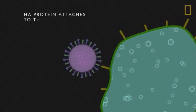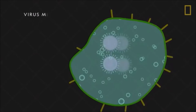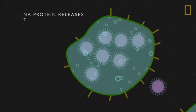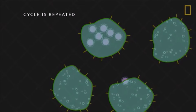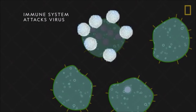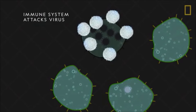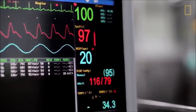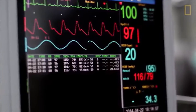The HA protein attaches the virus to a cell and lets it in. Once the virus is inside, it multiplies. Then the NA protein cuts this viral swarm loose, sending it off to infect more cells. This triggers the immune system to bombard the swarm and destroy infected tissue throughout the respiratory system. Unfortunately, this response can also inadvertently lead to death through organ failure or secondary infections like bacterial pneumonia.